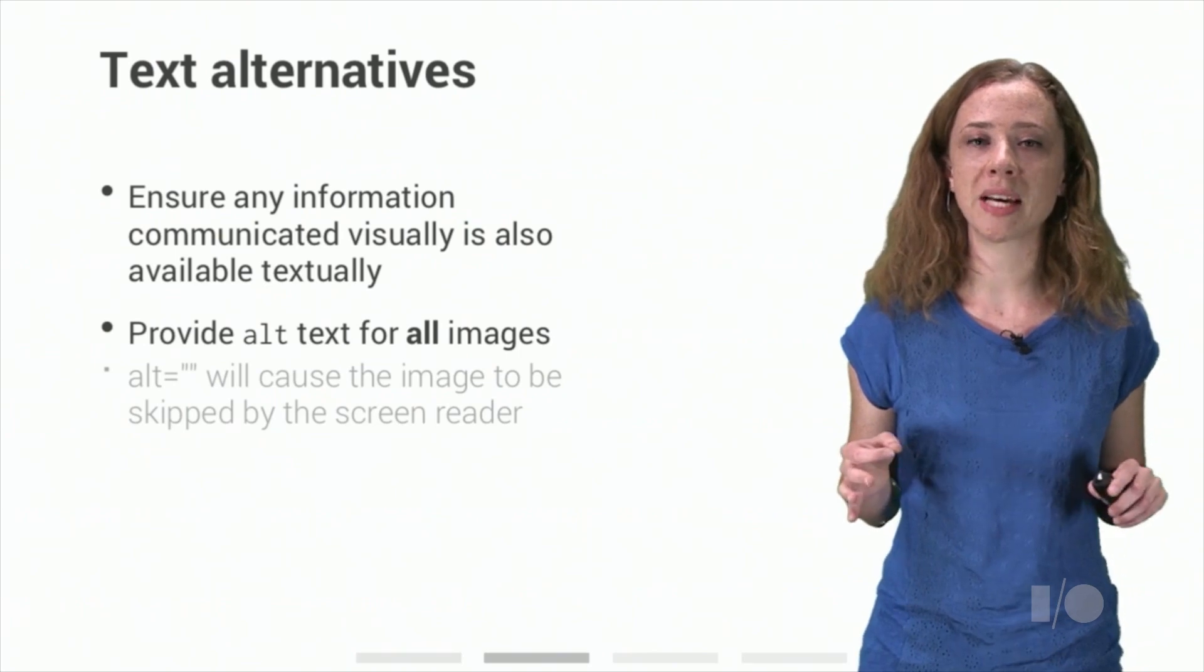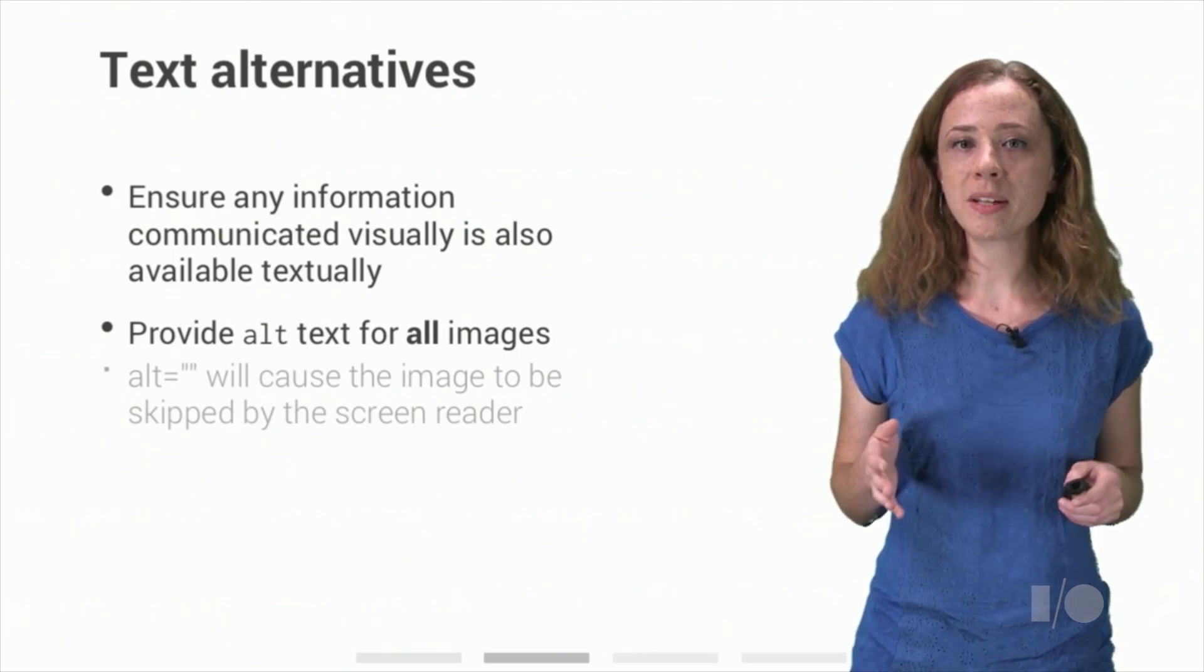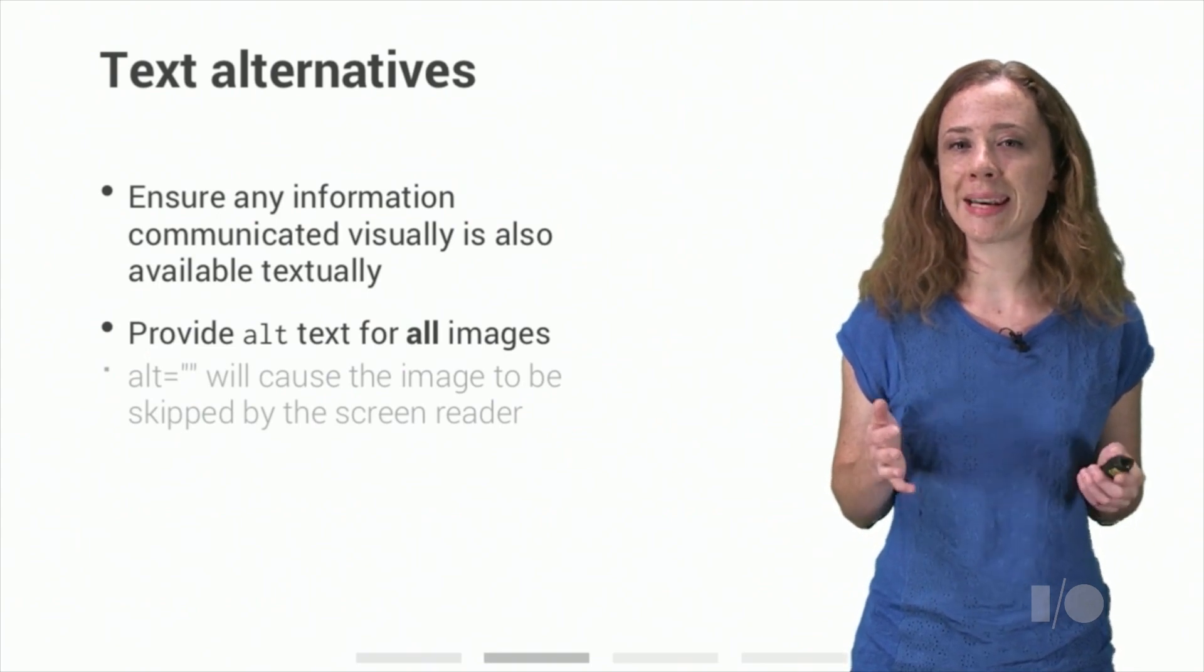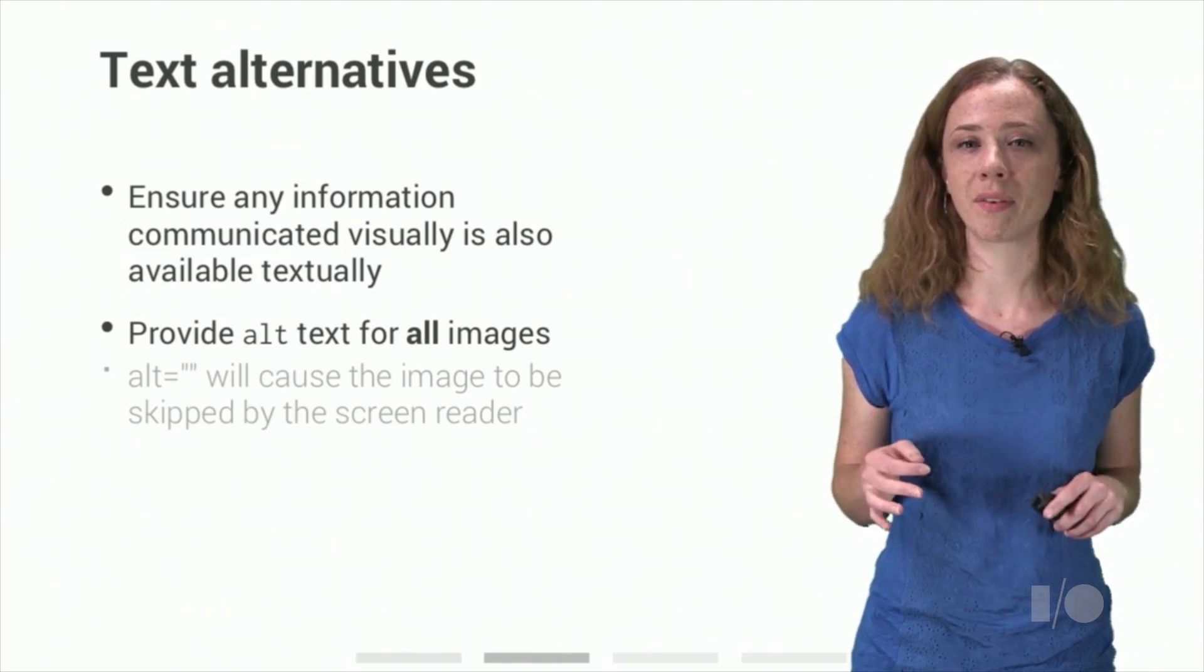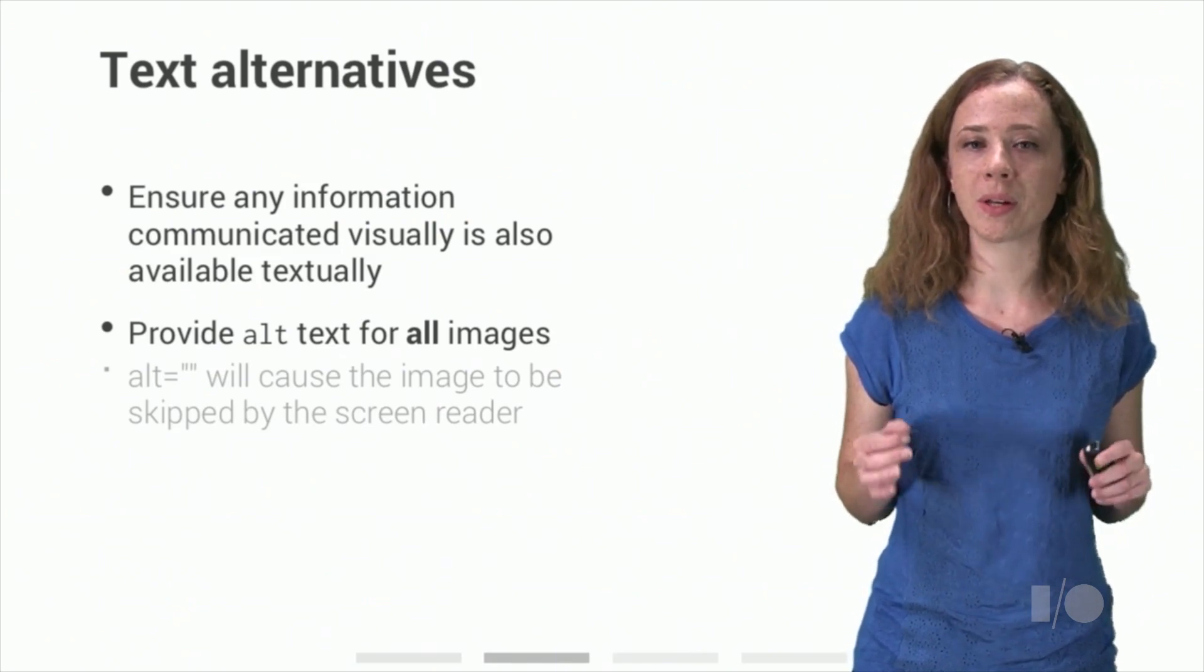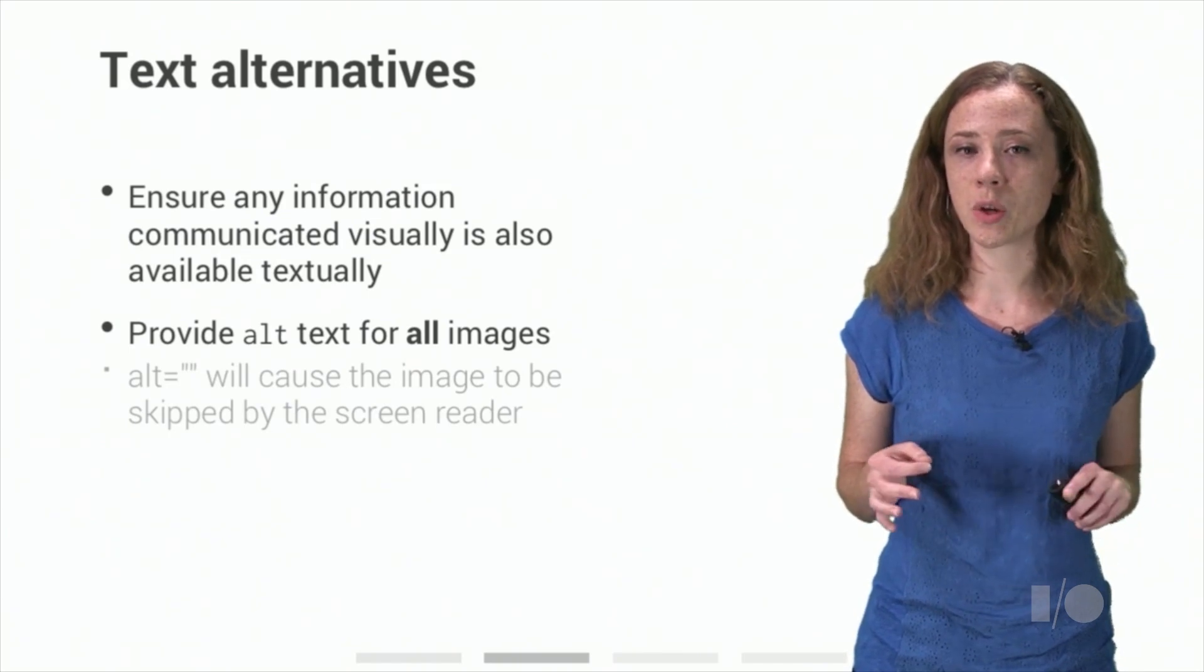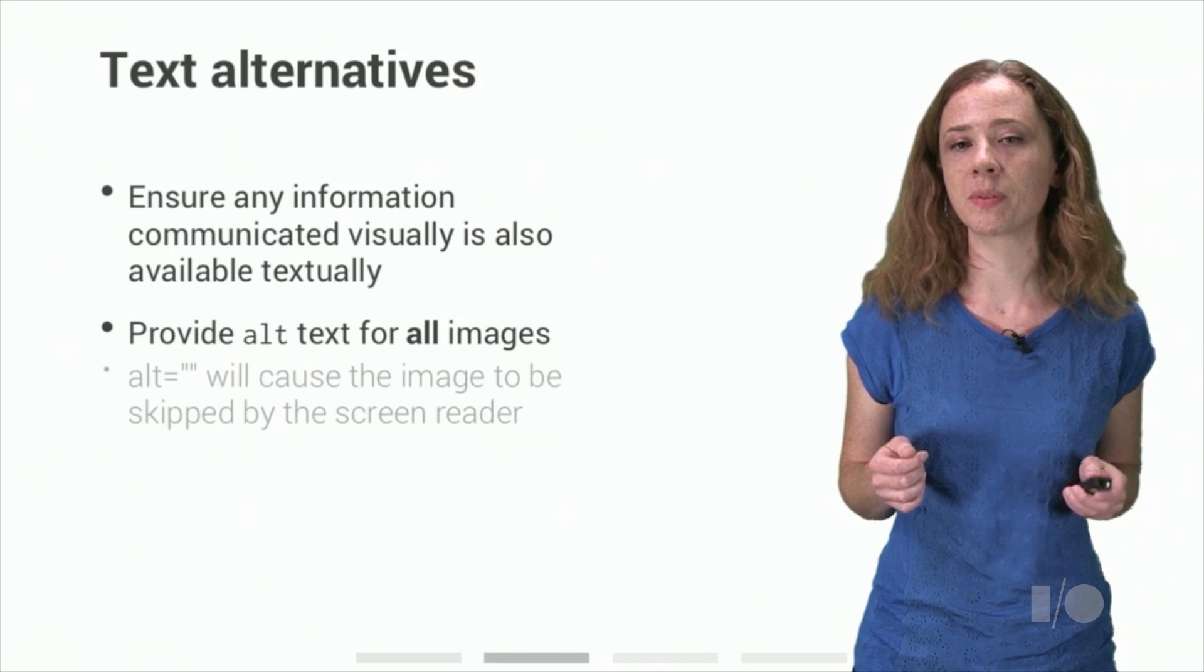Finally, once all your semantics are in place, make sure you always have text alternatives for any other information which is conveyed visually. For example, if your custom button uses a settings icon, make sure you give it a name of settings as well. And obviously, make sure all of your images have an alt attribute, even if you want them to be skipped by assistive technology. Assistive technology will try to come up with alternative text if you don't provide it, and often it'll pick the file name. So provide an empty alt attribute if you want the image to be invisible to assistive technology.